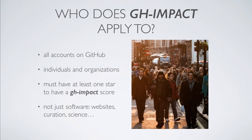GitHub contains more than just software, so the GH Impact score can also be influenced by the popularity of websites, the quality of curated lists, or even scientific research that is increasingly published on GitHub.